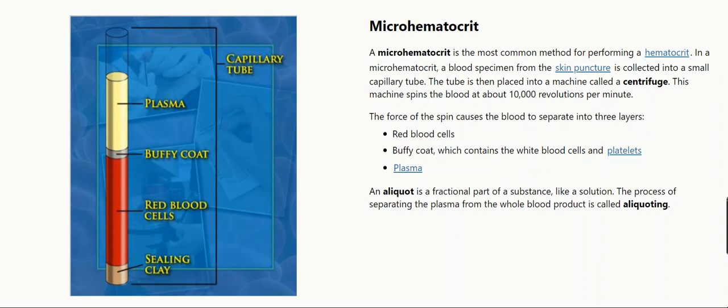An aliquot is a fractional part of a substance like a solution. The process of separating the plasma from the whole blood product is called aliquoting.